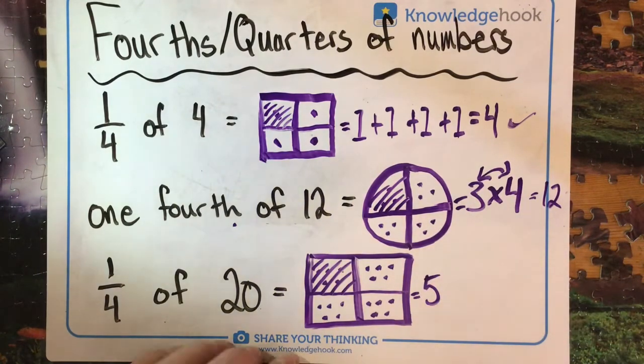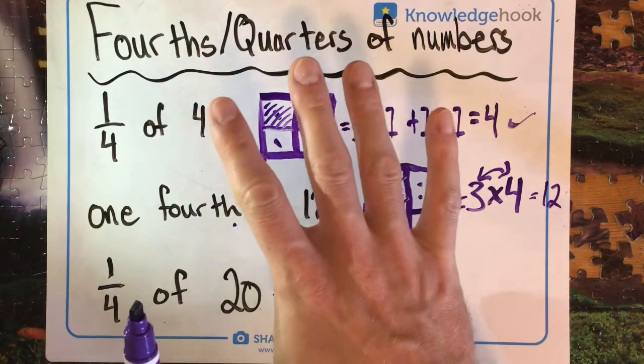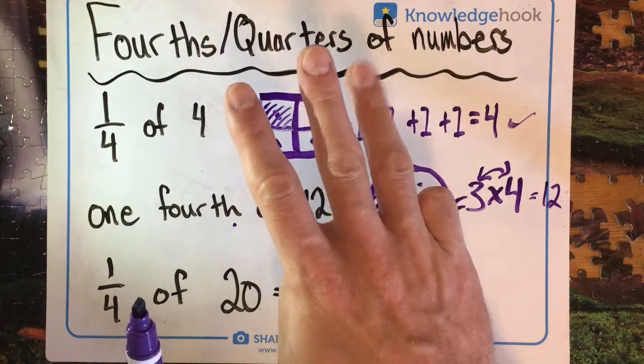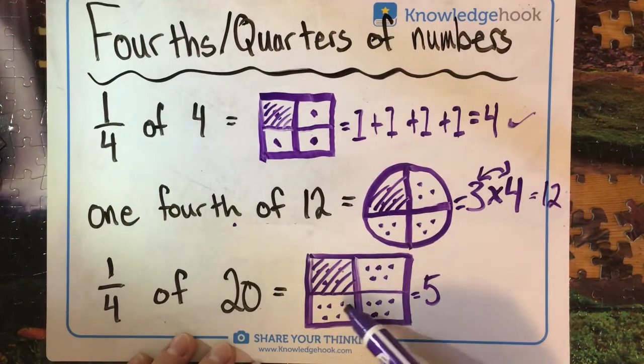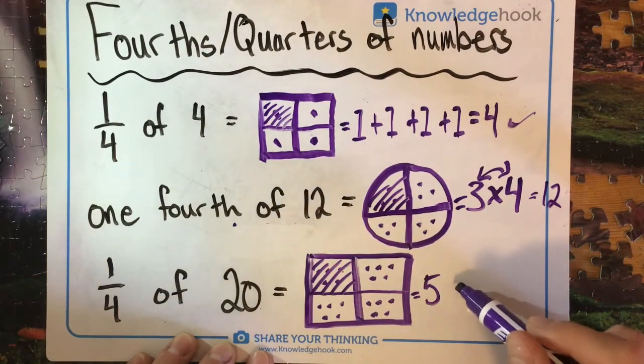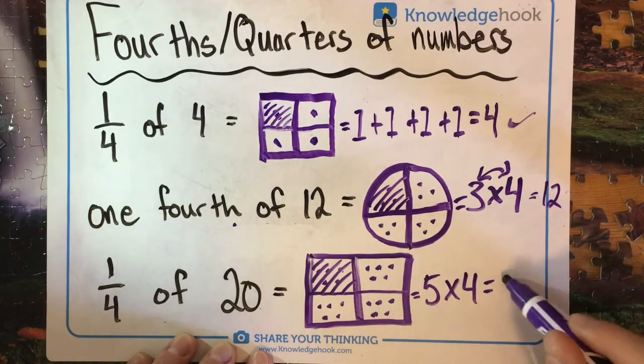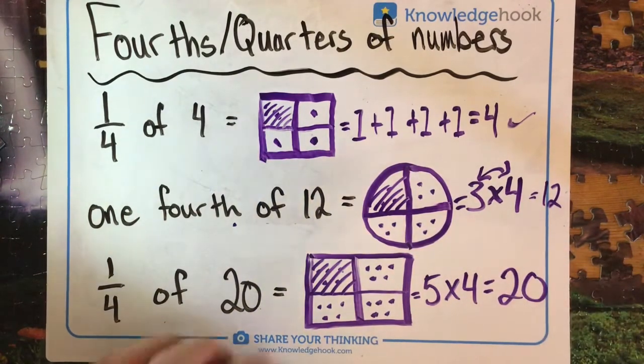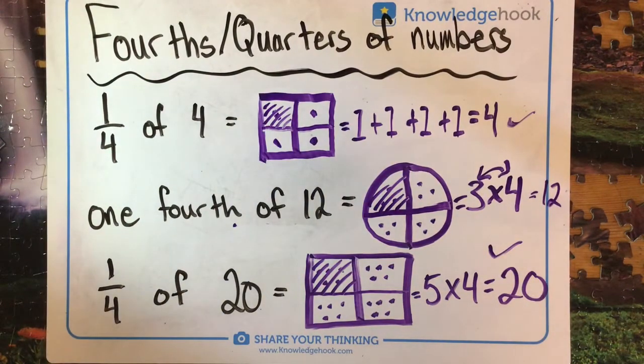And again, we're going to use skip counting to check this as well. So if I skip count by five, four times, then I'm going to go 5, 10, 15, 20 or 5, 10, 15, 20. So I know that this is correct because I can check it by going backwards and doing the multiplication.